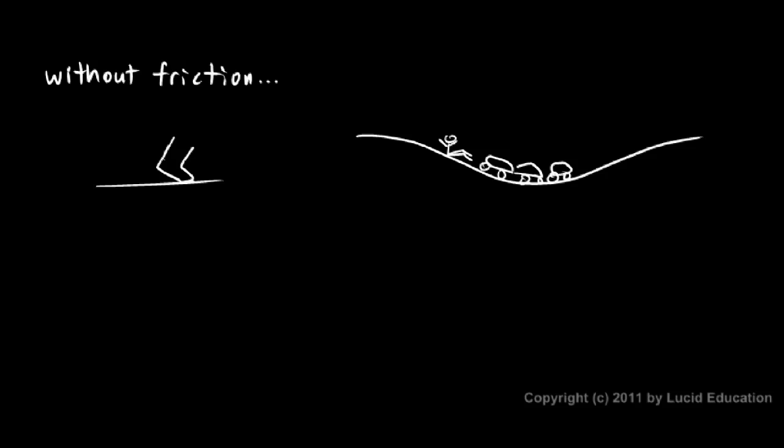If there weren't any friction, everything in your house would have to be bolted down to the floor. All the furniture would just slide around at the slightest bump. It would start to move and would just drift across the floor. So all the furniture would have to be bolted down.